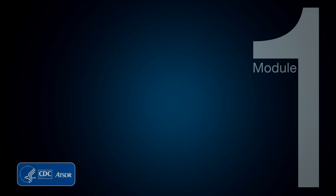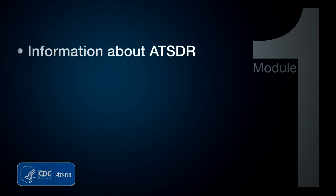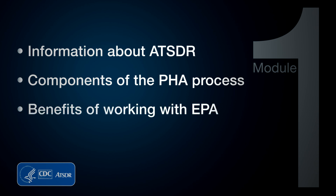To help you, Module 1 includes information about ATSDR, the components of the PHA process, and the benefits of working with the U.S. Environmental Protection Agency, also called the EPA. Additionally, Module 1 has resources that you can upload, print, and use as a reference for your future site work.